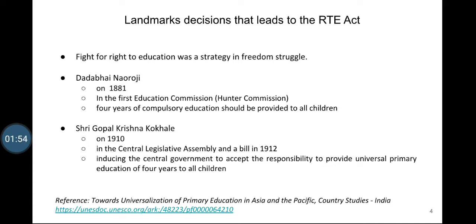Therefore, the fight for Right to Education was an important strategy in our freedom struggle, to make it possible for India to become a free democratic republic. The first effective step in this direction was taken in 1881 by Dadabhai Naoroji. In his evidence before the First Education Commission, popularly known as the Hunter Commission, he put forward the demand that four years of compulsory education should be provided to all children.